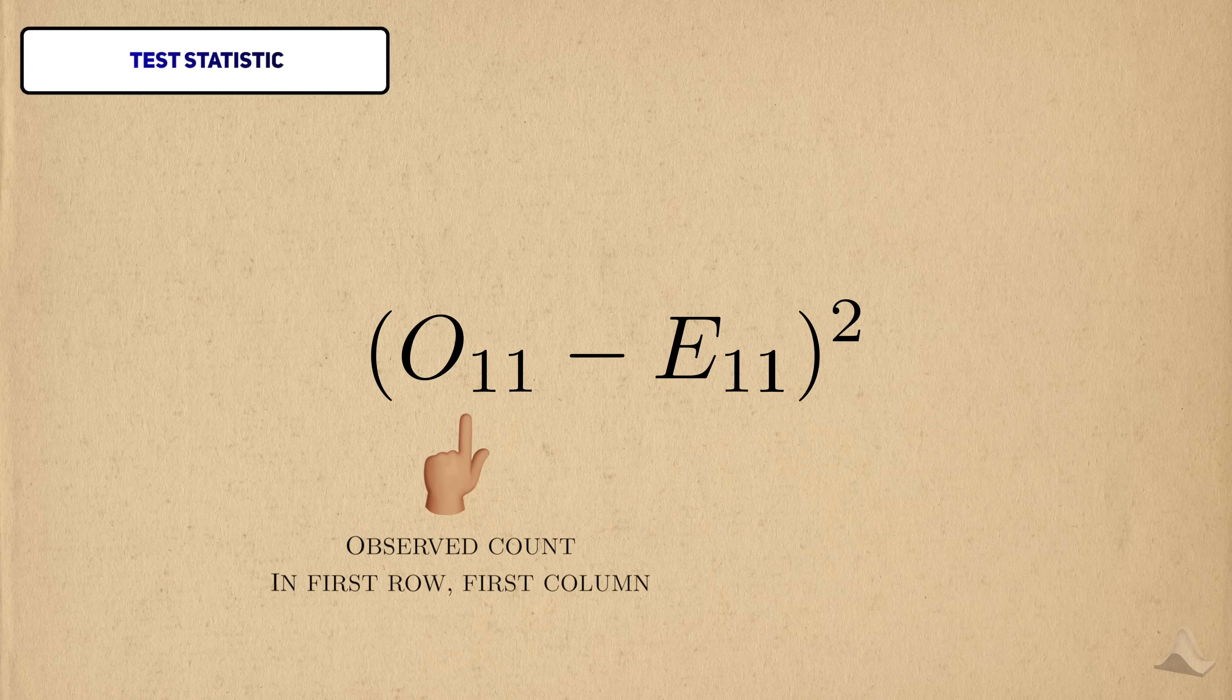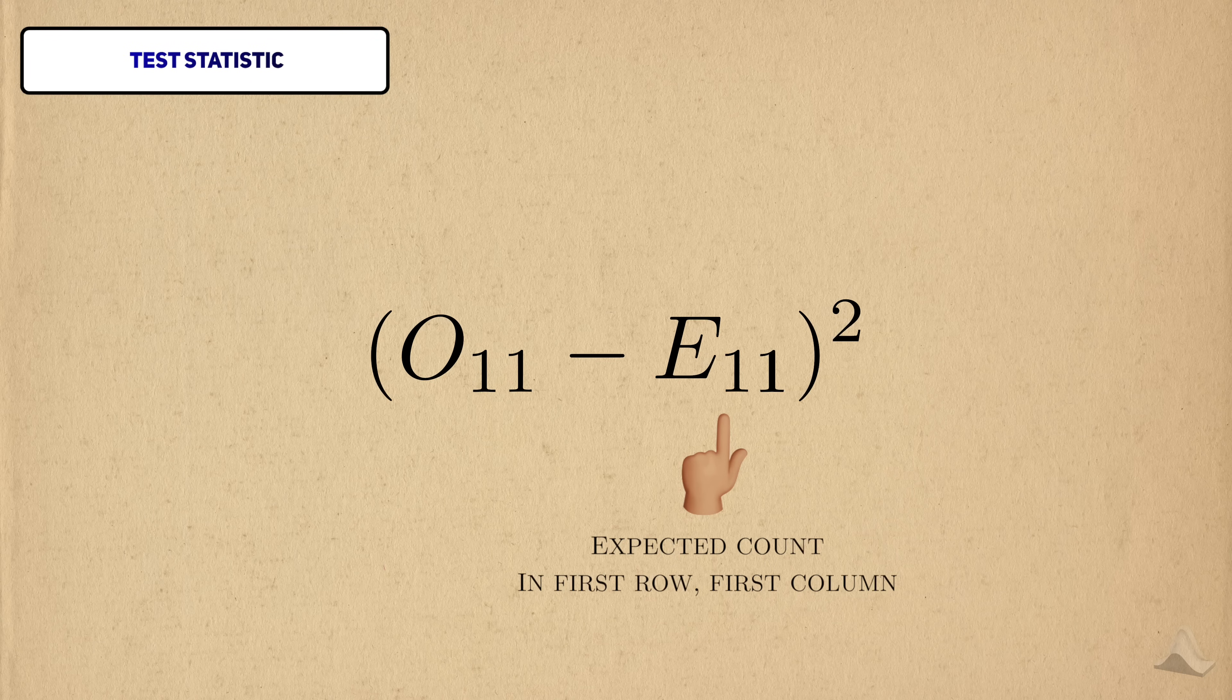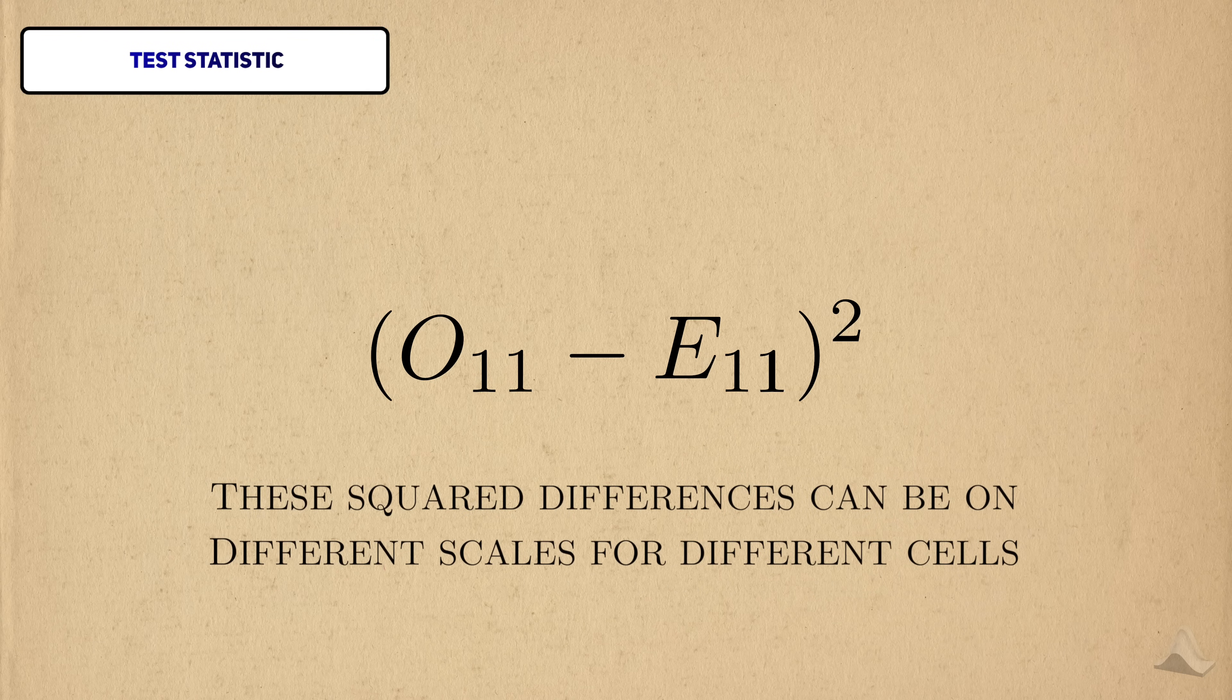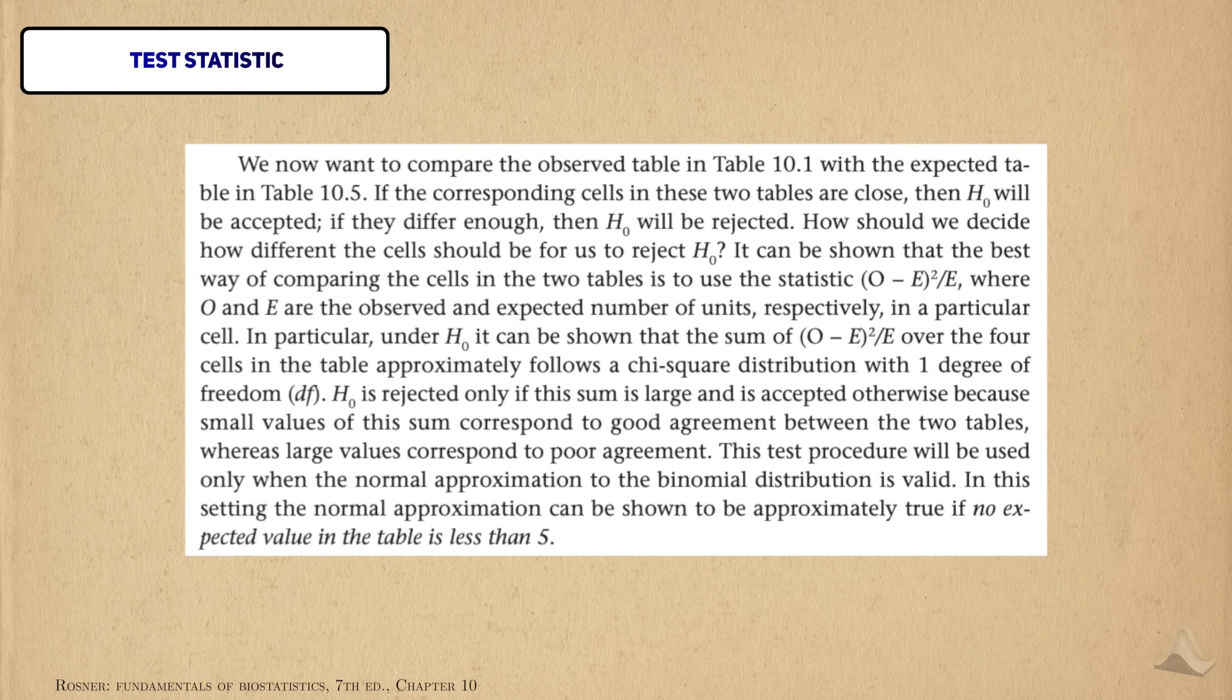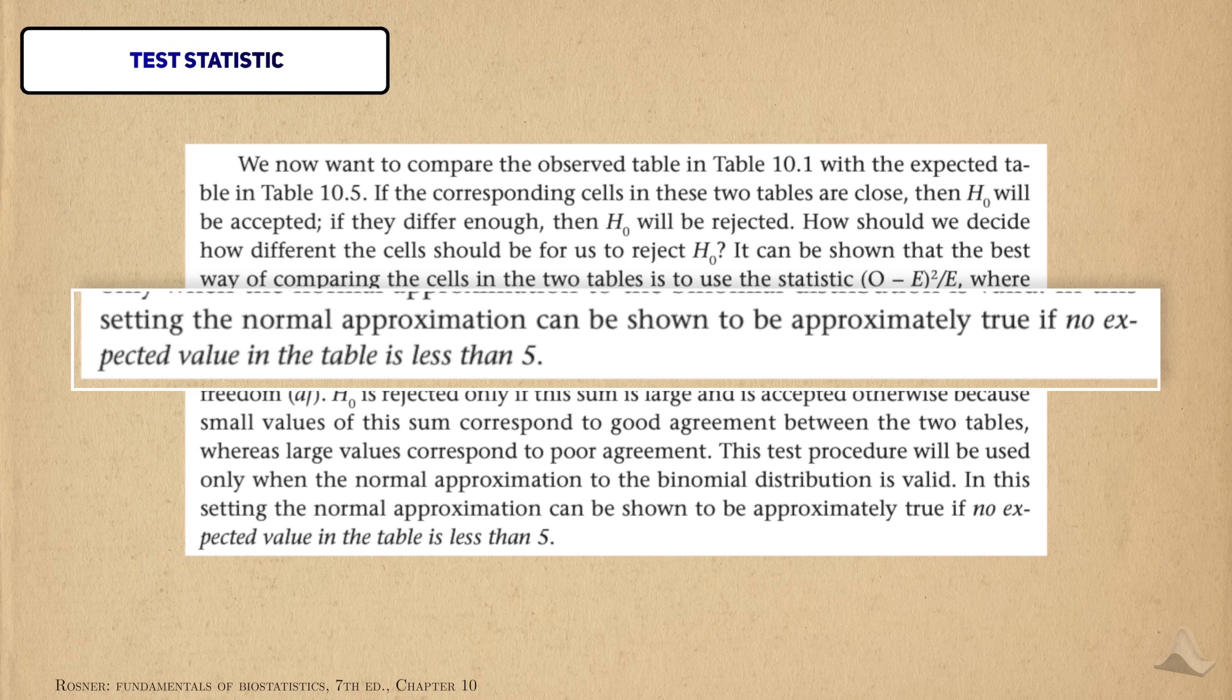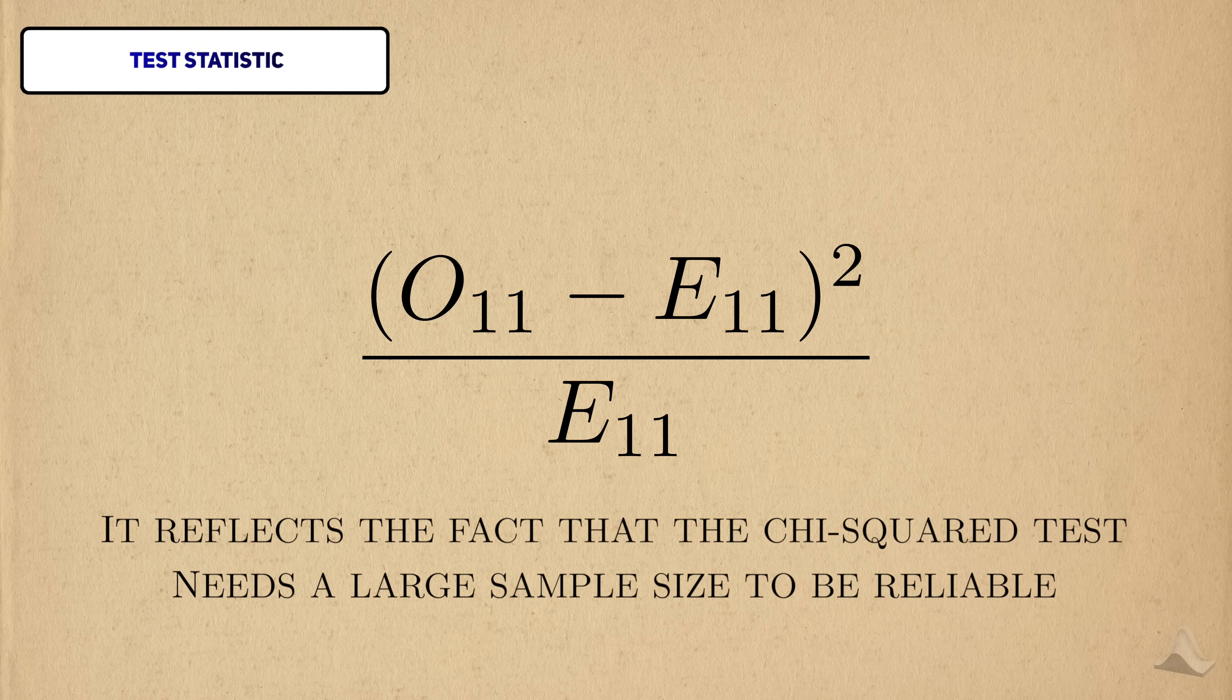To make sure that all the squared differences are on a comparable scale, we also divide them by the expected counts. You may see in other resources that most of the expected counts should be greater than 5 to use the test. This is actually a reflection of the fact that the chi squared test requires a large sample size to produce reliable results.